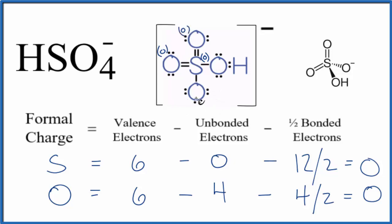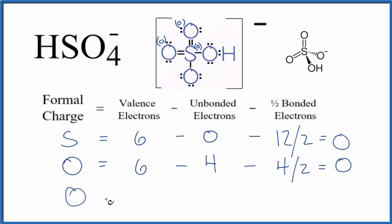How about we do the single-bonded oxygen next? With a single bond, we have six—it's oxygen, it will always be six. Then we have unbonded: two, four, six. Minus the bonded, which is right here, just this single bond.